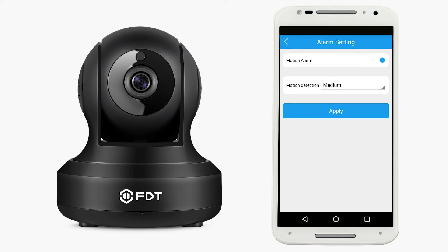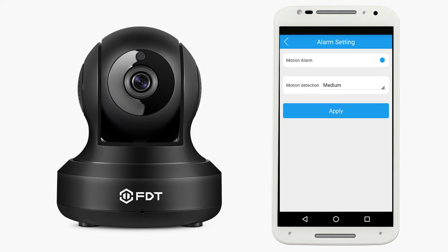Tap the motion detection toggle switch to enable or disable motion detection. To configure its sensitivity, tap the motion detection sensitivity menu item. Select a sensitivity. Please note, the higher the sensitivity, the more easily the camera will pick up movement. Tap apply to save your alarm settings.